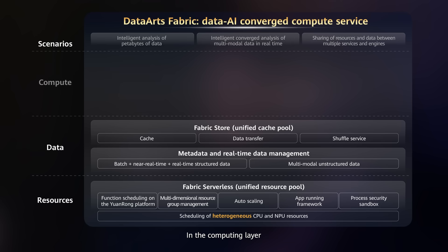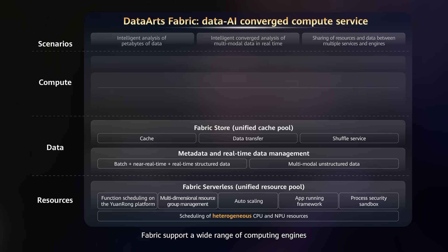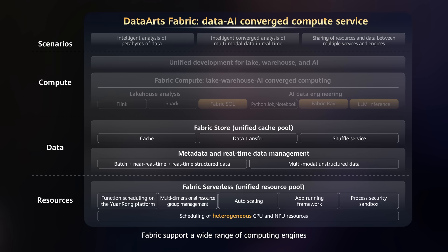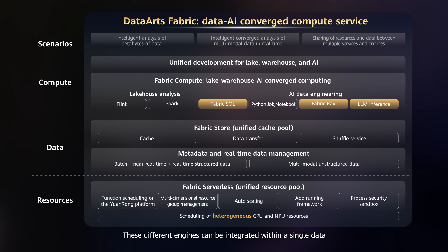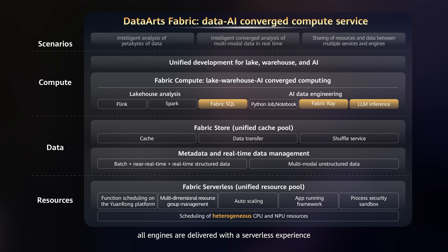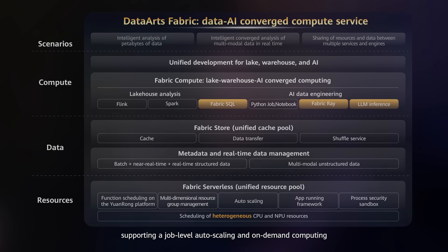In the computing layer, Fabric supports a wide range of computing engines, ranging from open source engines like Ray, Spark, and Flink, to our self-developed Fabric SQL engines. These different engines can be integrated within a single data pipeline job to execute complex data and AI processing. What's more, all engines are delivered with the serverless experience, supporting job-level auto-scaling and on-demand computing.